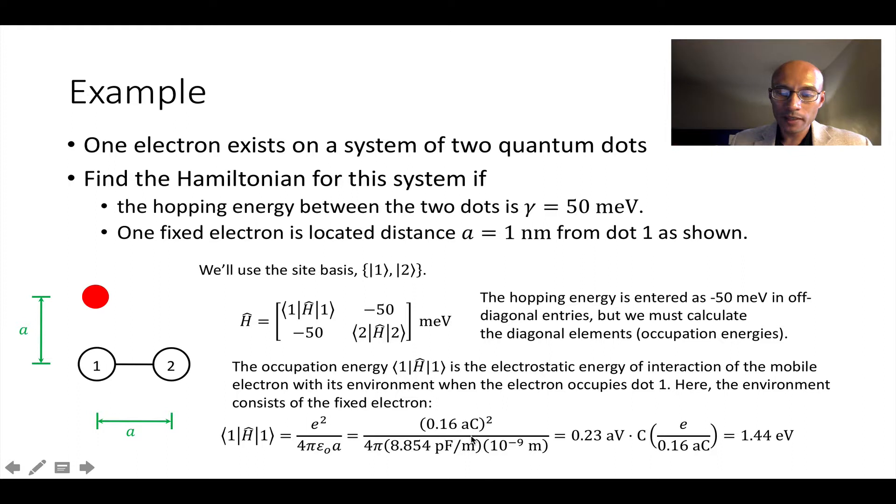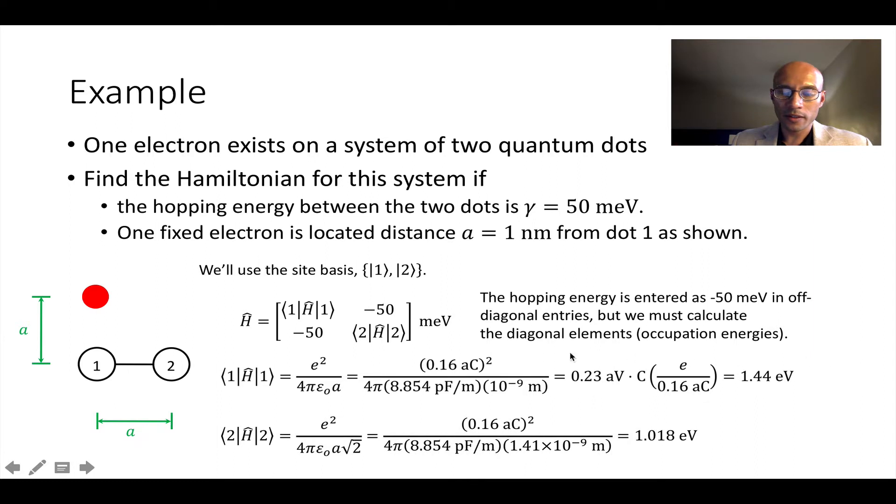Okay. One thing I need to point out here is that a Coulomb divided by a Farad is a volt. So that's how I get 0.23 Atto volts here and then Coulombs. And now I'm going to do a conversion where E is one electronic charge. The Coulombs cancel, so we get electron volts. And this is a unit of energy. So there is the occupation energy for state one. Similarly, state two can be calculated like this. And so now we have the diagonal elements and we just update the Hamiltonian.